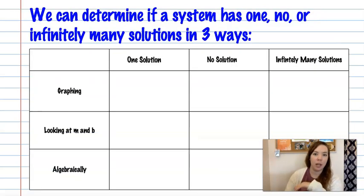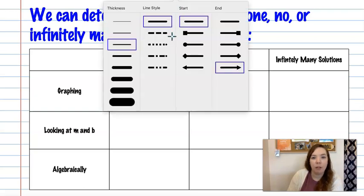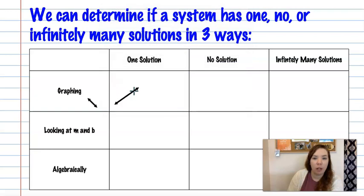Okay, so we're going to fill out this table together and we can determine if a system has one, no, or infinitely many solutions three different ways. So let's talk about graphing first. When we graph two lines, if we have one solution they will cross at one point. Okay, so obviously they're not always going to look exactly like these two lines but they would cross at one point.